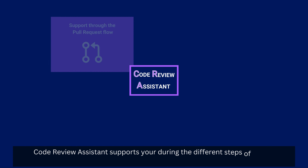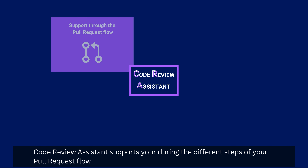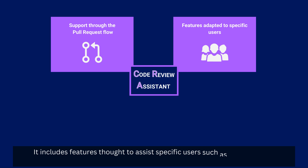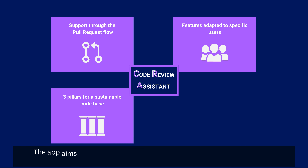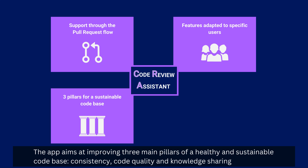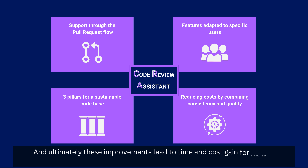CodeReview Assistant supports you during the different steps of your pull request flow. It includes features thought to assist specific users such as pull request creators, reviewers, and project teams. The app aims at improving three main pillars of a healthy and sustainable code base: consistency, code quality, and knowledge sharing. And ultimately these improvements lead to time and cost gain for your entire team.